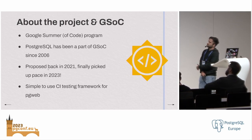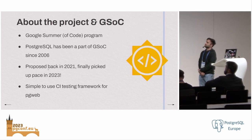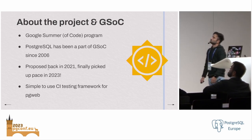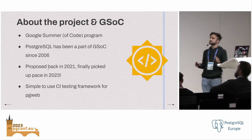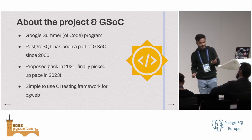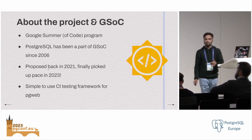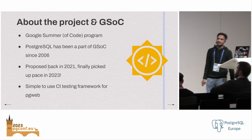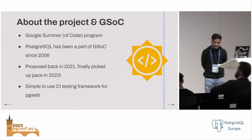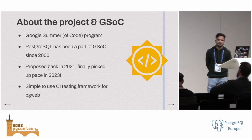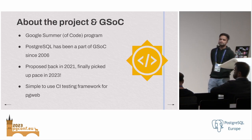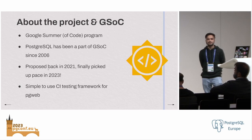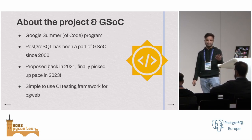A little bit about the project and about GSOC, because it is what made it possible. GSOC stands for Google Summer of Code. Postgres has been part of this program since 2006, and this particular project — the testing harness — was proposed back in 2021 and finally picked up pace in 2023. The goal was to develop a relatively simple-to-use CI framework that was completely separate from the PGWeb codebase.